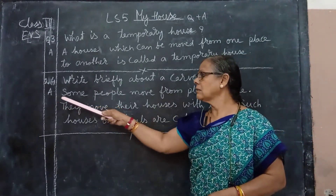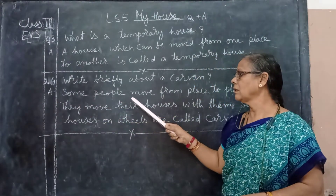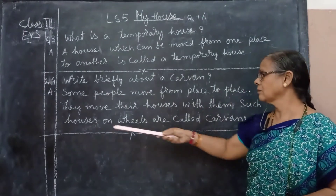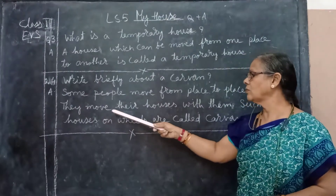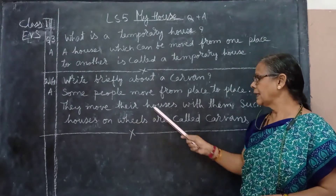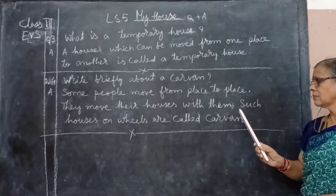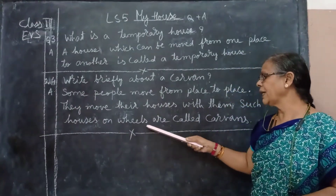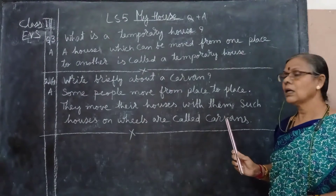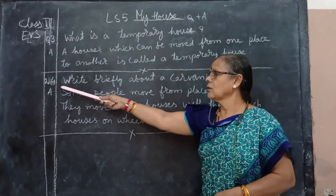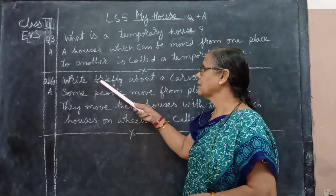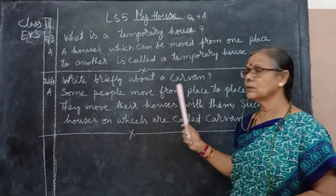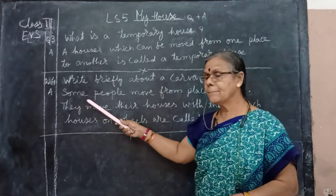Fourth question: write briefly about Karwan. Answer: some people move from place to place. They move their houses with them. Such houses on wheels are called Karwans.